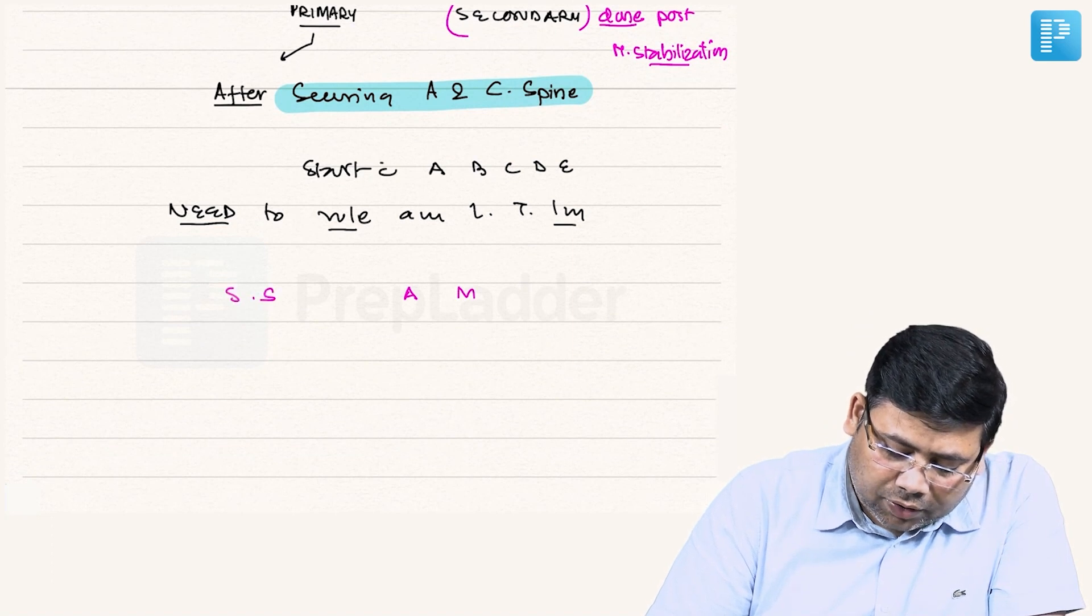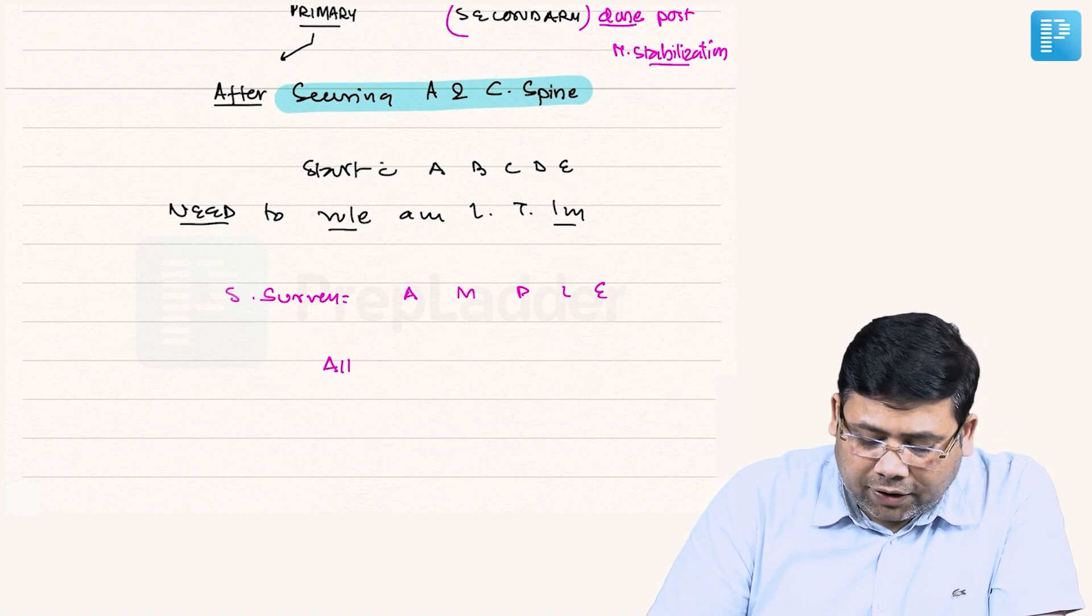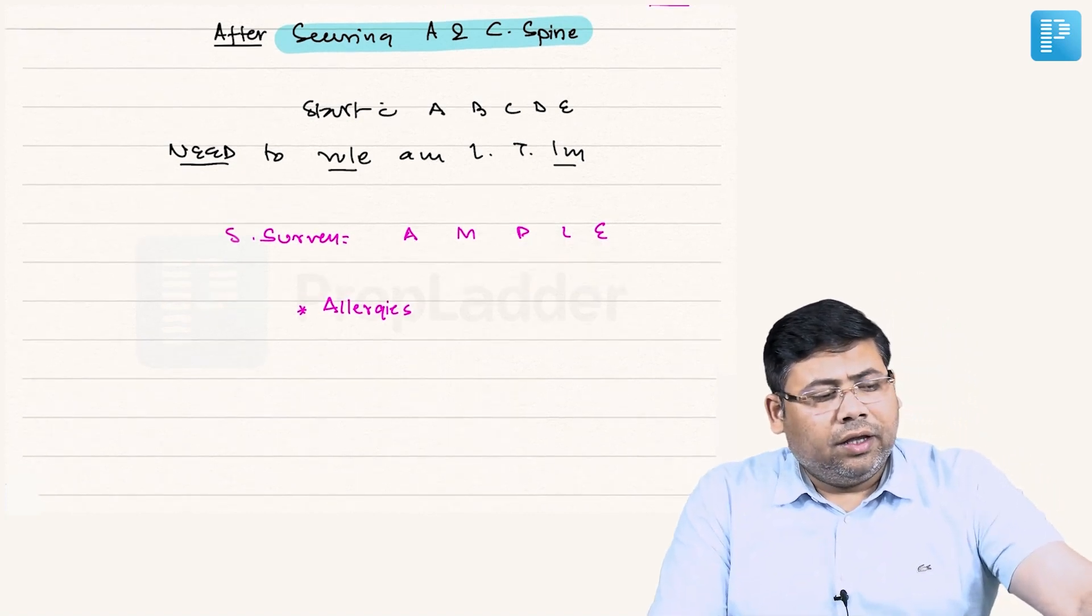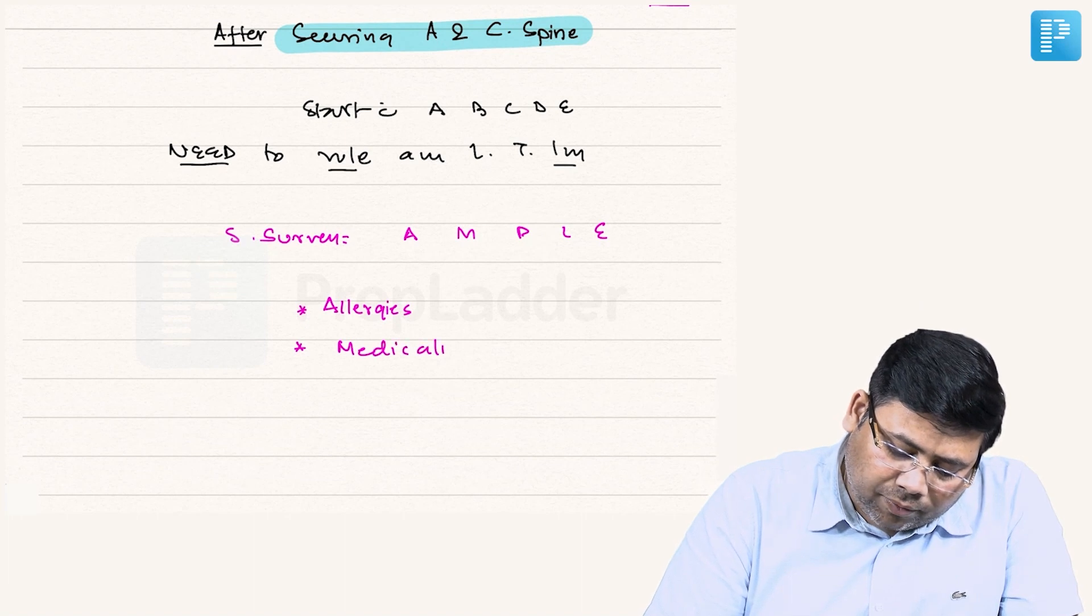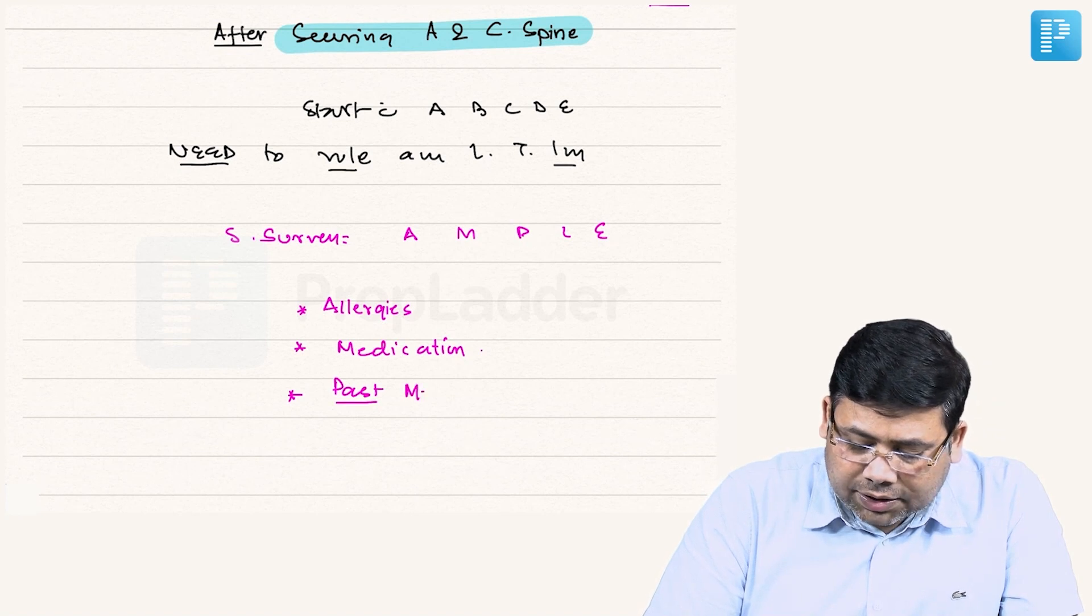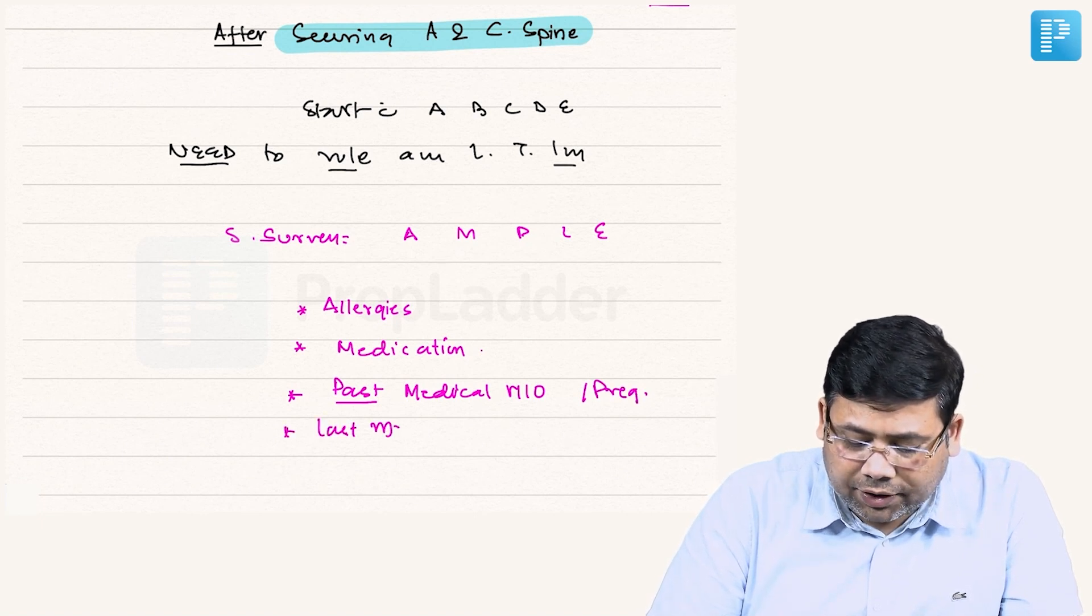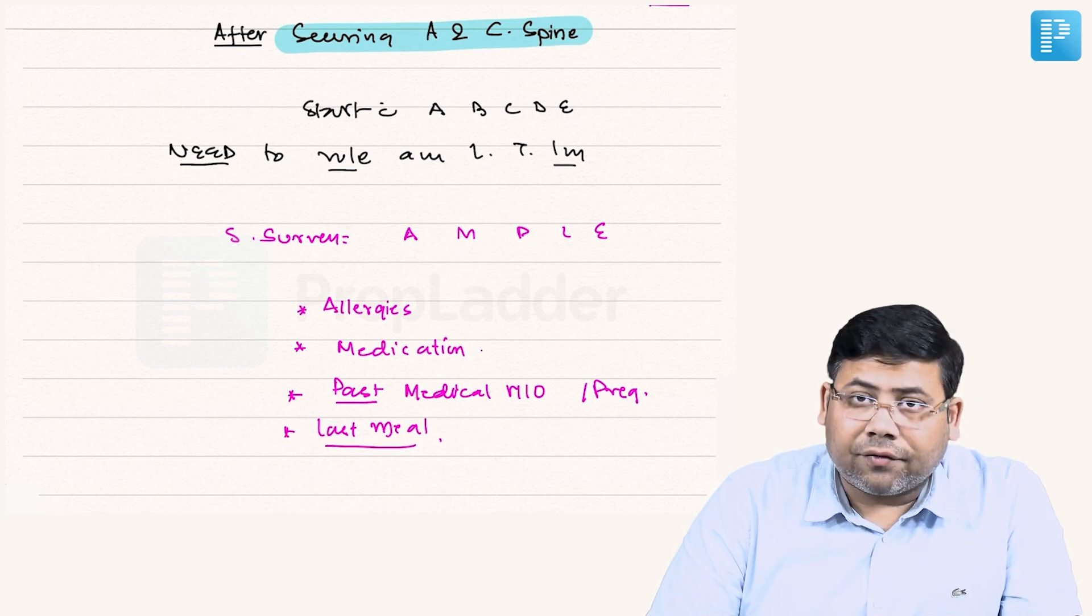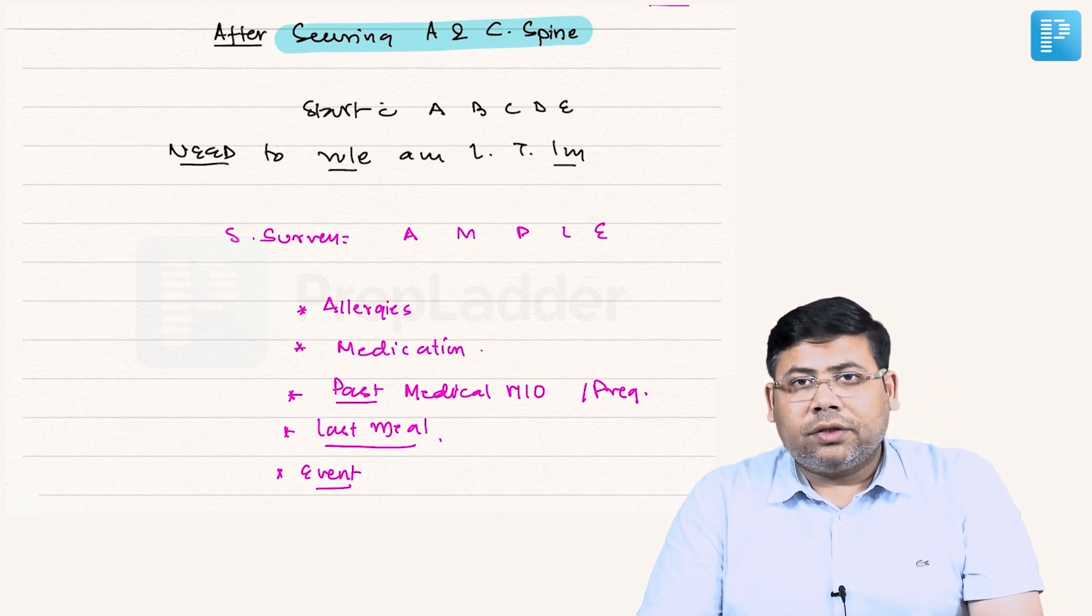If you talk about secondary survey, we talk about AMPLE. What do you mean by AMPLE? We have to talk about allergies—whether the patient is allergic to any drug or not. M for medication. P for past medical history. If dealing with a female patient, pregnancy status. L for the last meal, because the patient might require surgical intervention, and E is the event of trauma. So this is how we approach these patients.